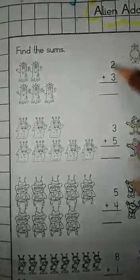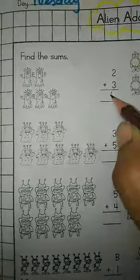How many all together? Five. Two plus three? Five.